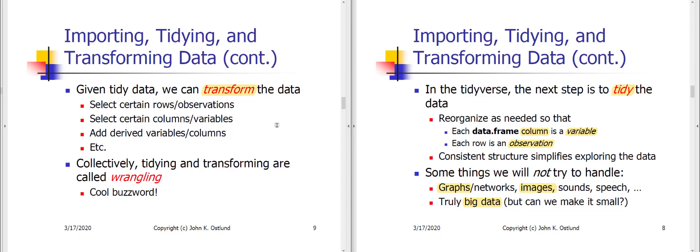For example, if you, again, let's suppose that we had patients in a doctor's office in one of our data frames, we might transform the data by saying, okay, I only want to look at males between the ages of 20 and 50. All right. So in that case, what we've done is we've narrowed down the data that we're working with to just a certain subset of rows.